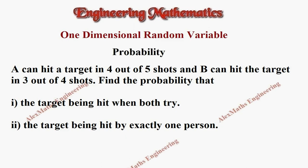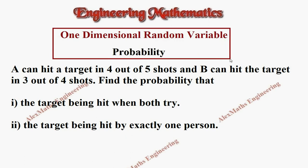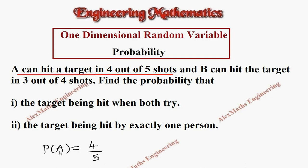Hi students, this is Alex. In this video we are going to solve a problem from one-dimensional random variable under probability. The question is: A can hit a target in four out of five shots, which means the probability of A, written as P(A), is four out of five.